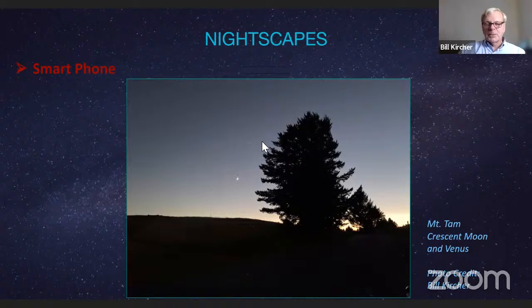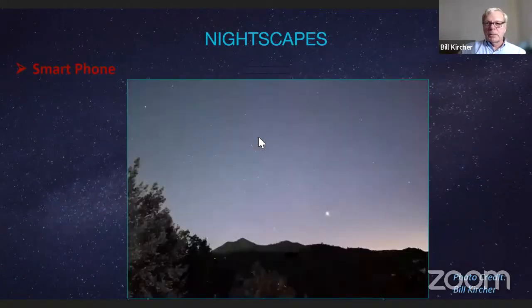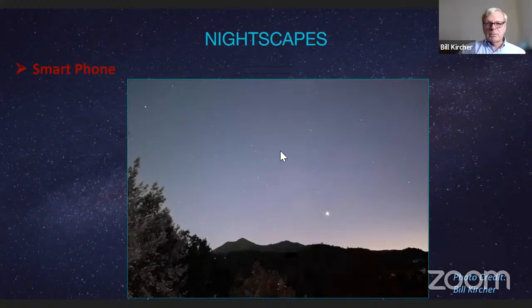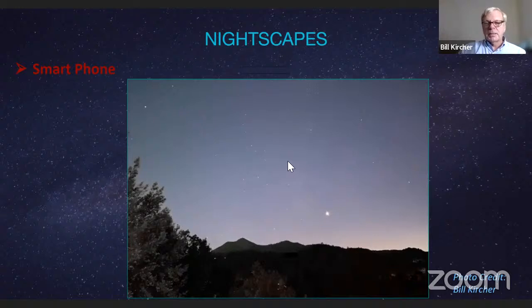Lesson: the sky is going to always look brighter with a cell phone because it uses algorithms — it looks bluer than it actually was. The moon and Venus looked a lot bigger when I was looking at them, but in the picture you can barely see them. Consider your composition and what it will look like — this is part of the trial and error process. You might think of nightscapes as being like travel pictures that remind yourself of what you did and what you saw.